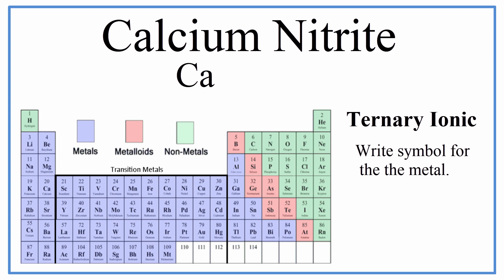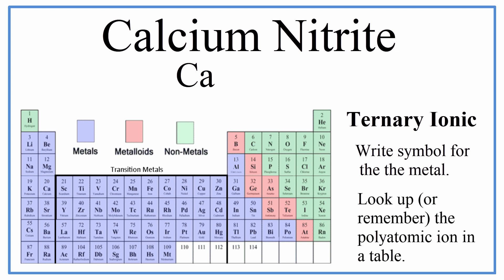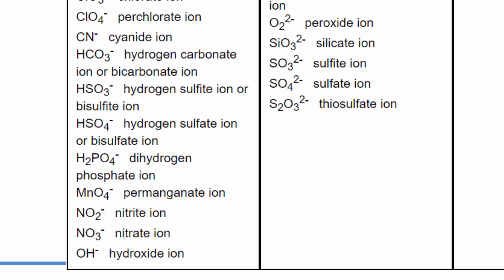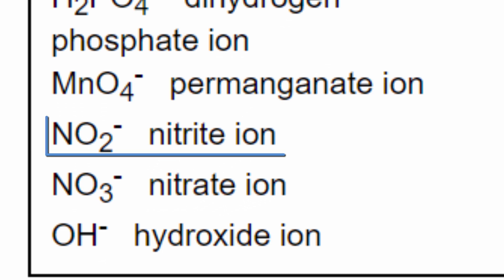For nitrite, we won't see that on the periodic table — we'll need to look it up in a table of common polyatomic ions. You'll usually be given this table to write the formula for chemical compounds. We can see that the nitrite ion is NO2-. So we know that nitrite, that polyatomic, is NO2. Don't worry about the negative sign — we'll come back to that a little bit later.